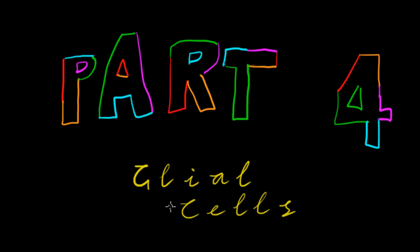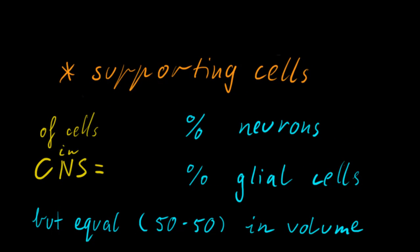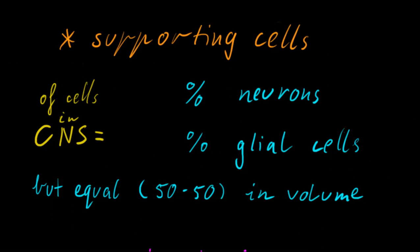G'day, my name is Tom and welcome to part 4, glial cells. In the nervous system, glial cells exist as supporting cells. In the central nervous system, neurons account for 10% of the cells while glial cells account for 90%. However, they are relatively equal in volume because neurons branch out a lot and are just bigger overall than glial cells.